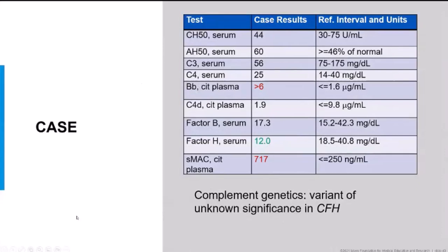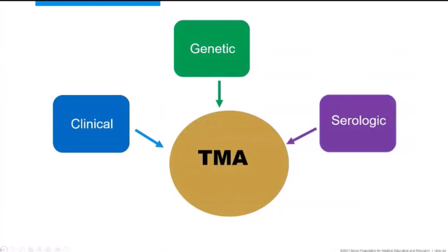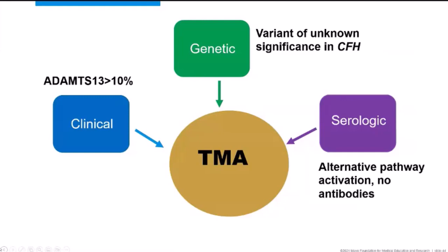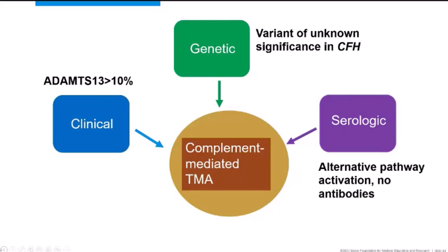Returning to the patient case: her complement serology showed elevated Bb, low factor H, and elevated sMAC — consistent with activation of the alternative pathway. Her complement genetics revealed a variant of uncertain significance in CFH. Putting this together clinically, with no TTP and no secondary conditions, plus alternative pathway activation on serology and a CFH variant, I considered her to have complement-mediated TMA.